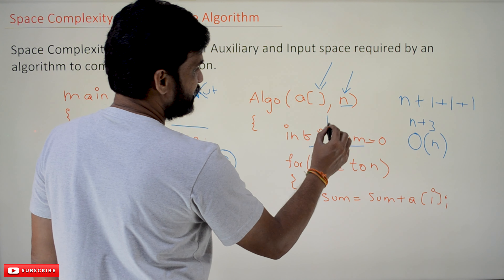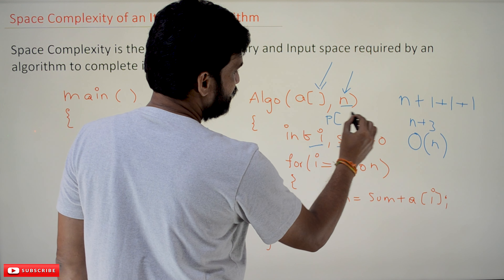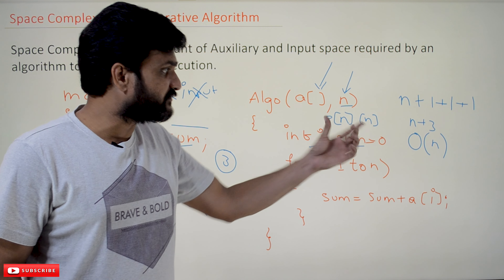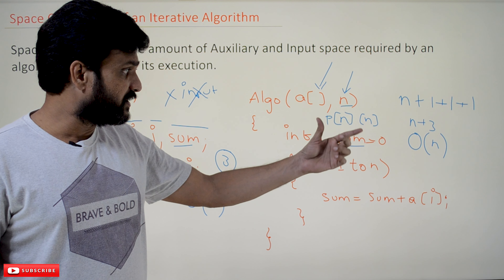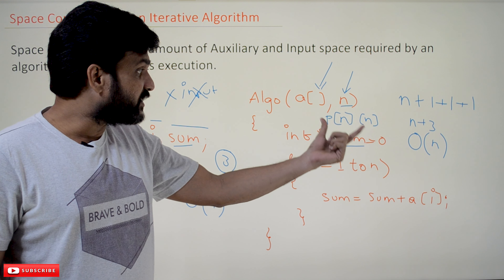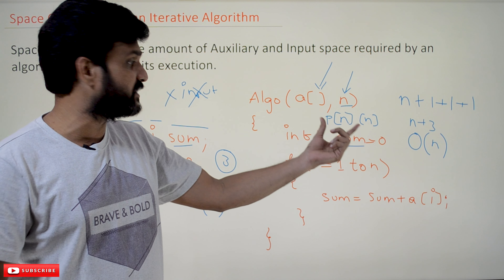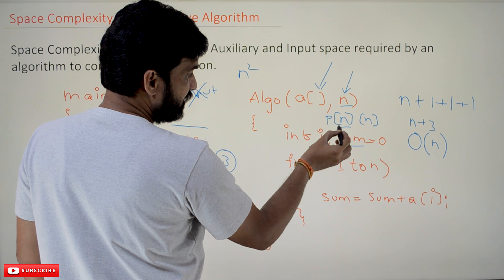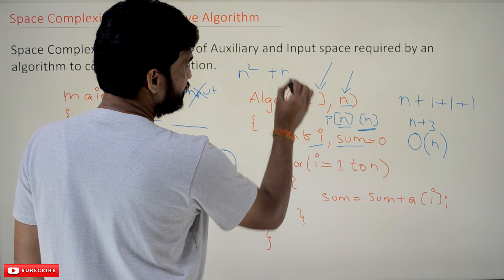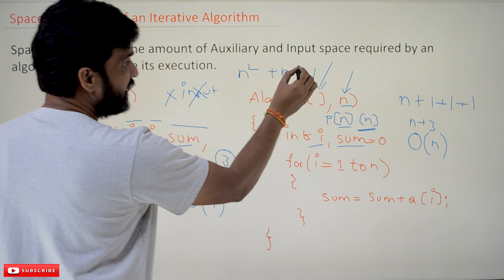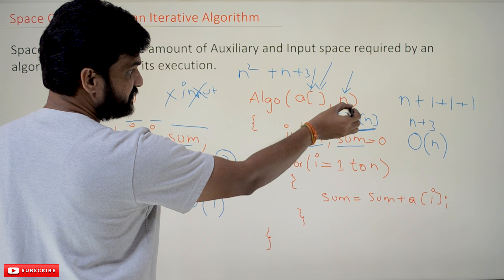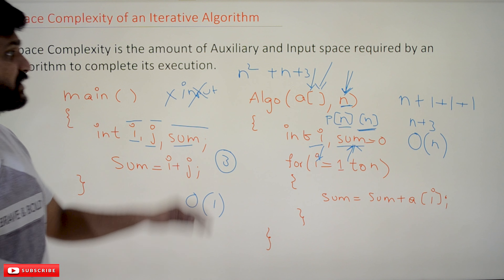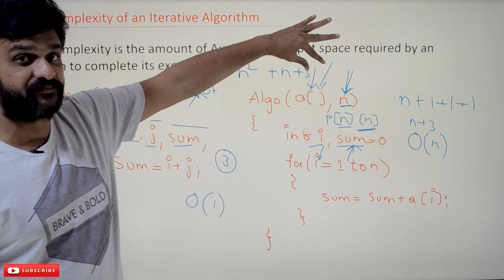For another example, suppose we have a two-dimensional array of size n×n. Don't worry about the algorithm details — just understand that a 2D array is used by the program. The amount of space required by this n×n matrix is n². We also have a one-dimensional array of size n used in the algorithm, which takes n units, plus one unit each for n, i, and sum.